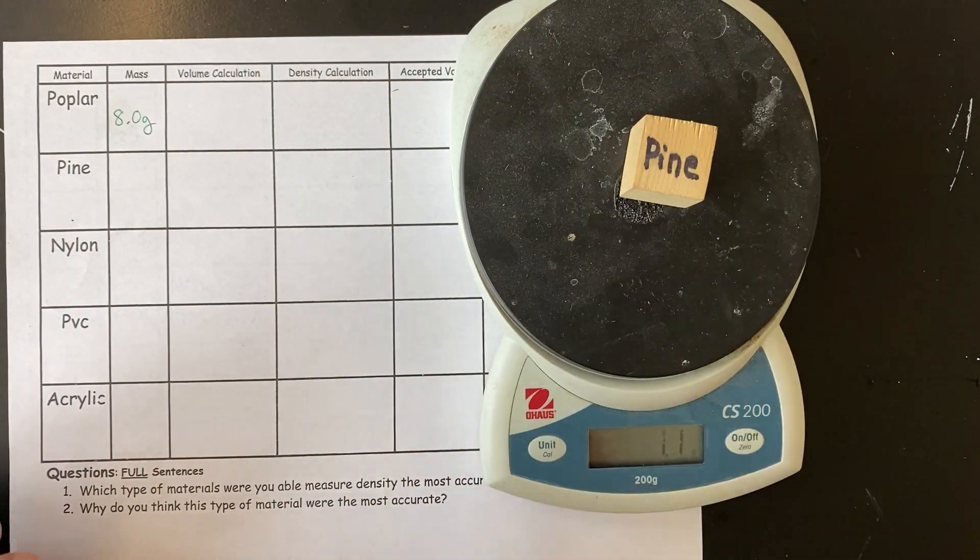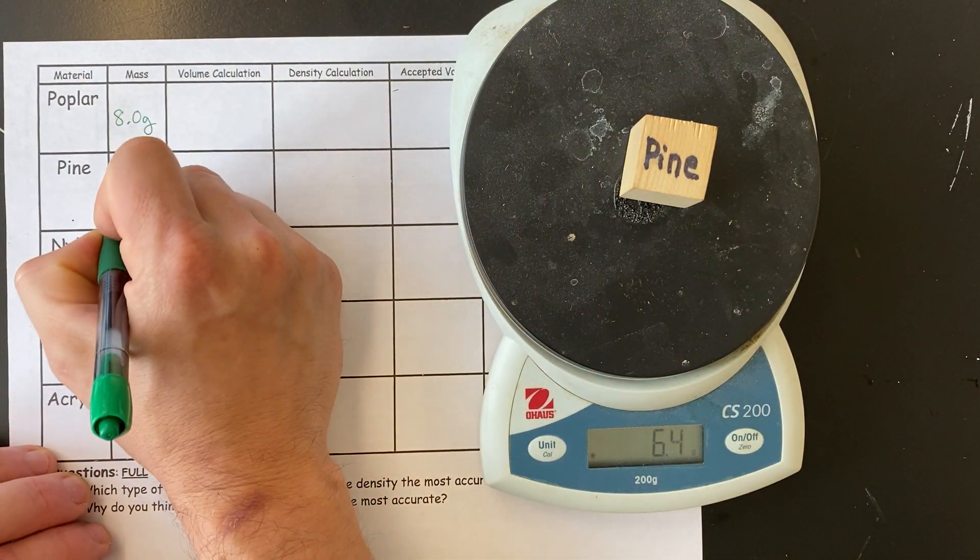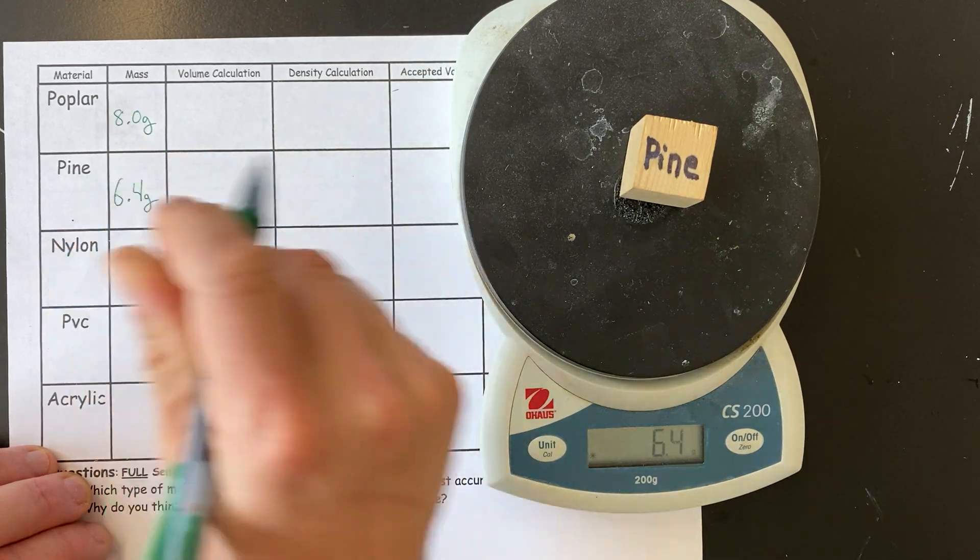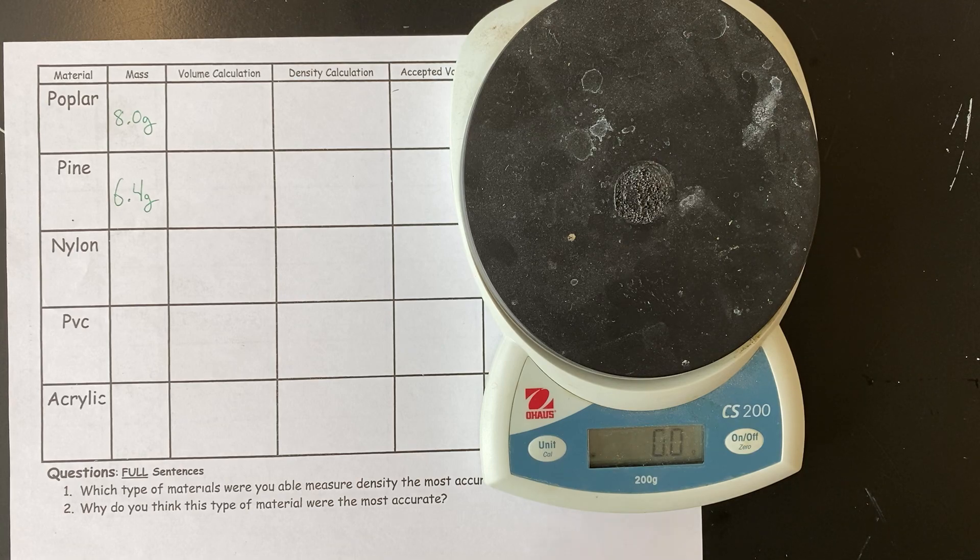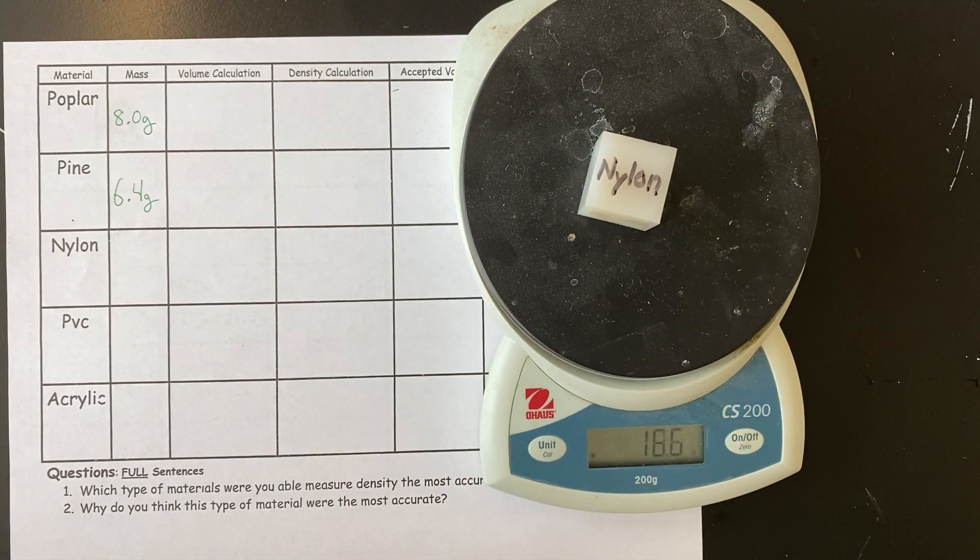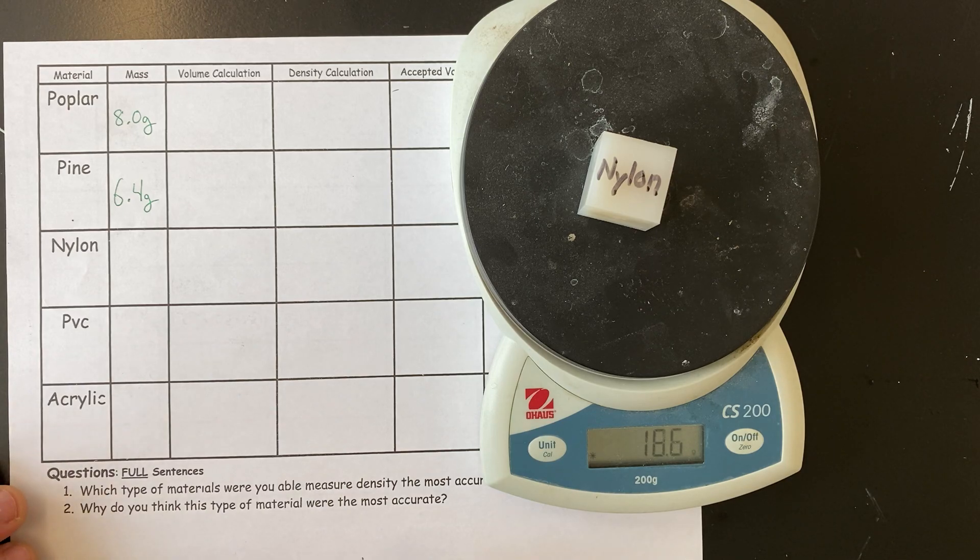Pine, we've heard of. Hopefully. Nylon is the type of plastic that we make clothing out of. But when you see it in a cube form, it doesn't look like anything. Anything like clothing.